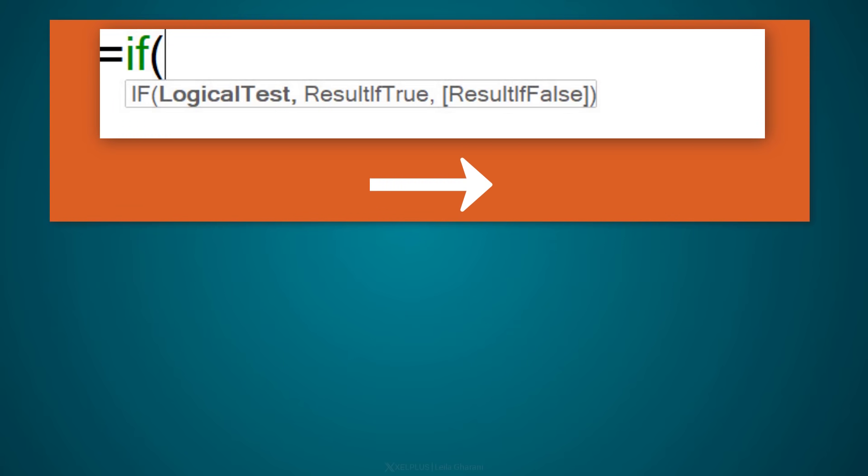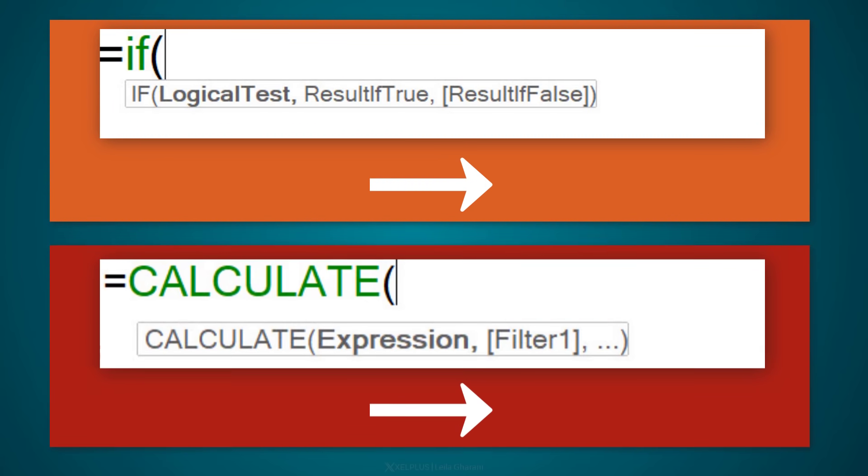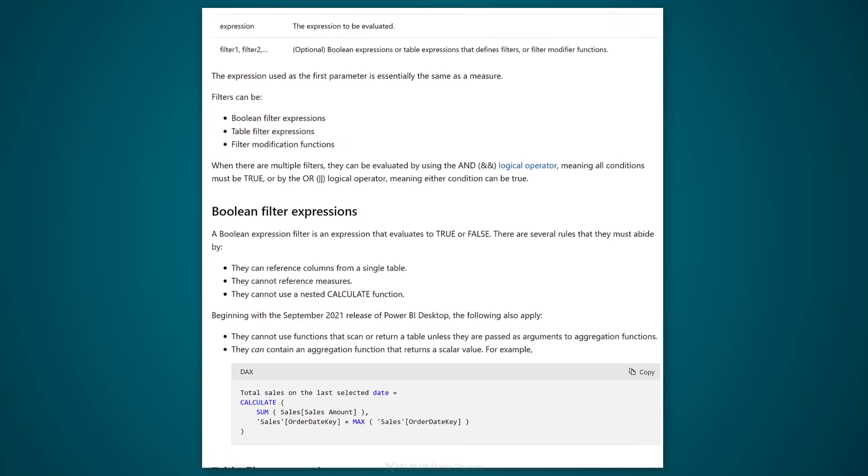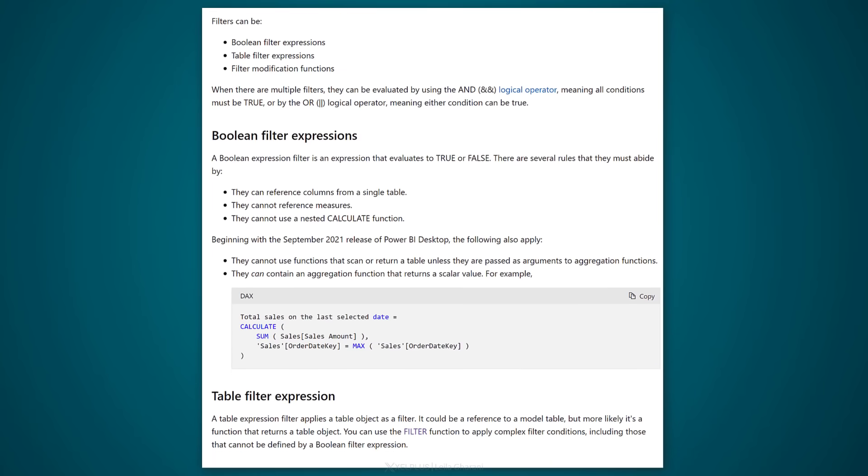The CALCULATE function is one of the most powerful functions in DAX. It's also a very special function because it's different. Usually functions calculate from left to right, but the CALCULATE function doesn't work like that. The definition of the function itself can also be quite confusing to understand. So my attempt is to summarize this definition to a single word, which I'm pretty sure you'll understand.